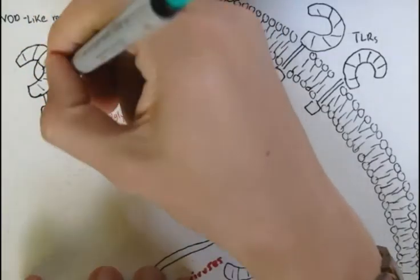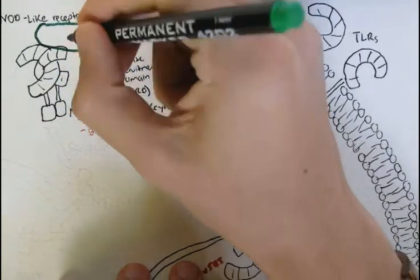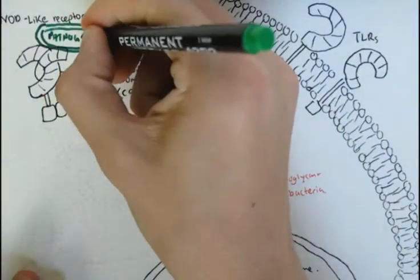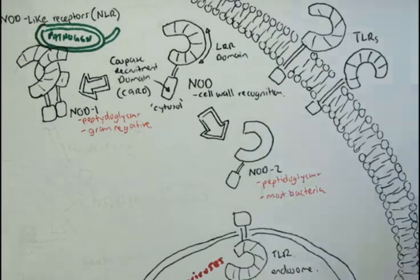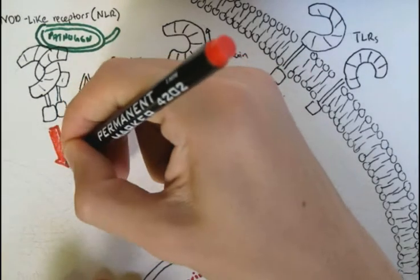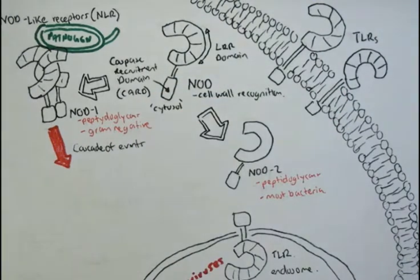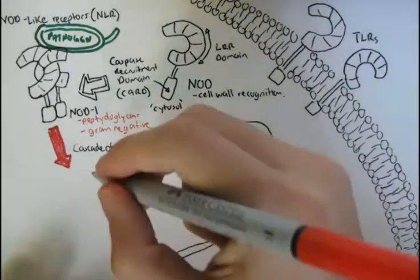For example, when NOD1 binds to a pathogen cell wall component, two of these NOD1 receptors have to bind together in order to be activated while binding to the PAMP. The two lower CARD domains attach, which then initiates a cascade of events.